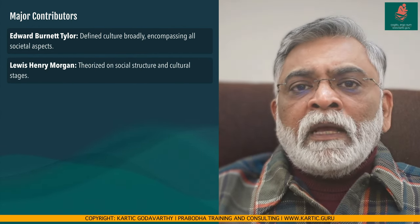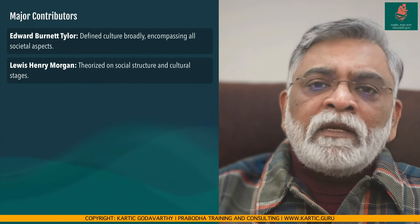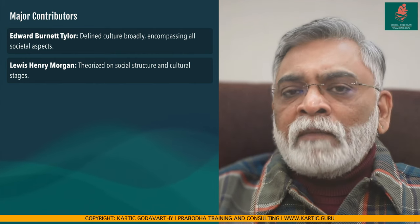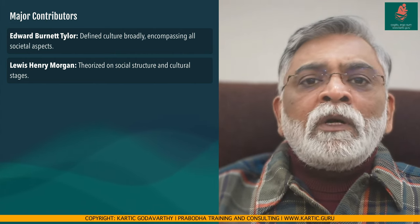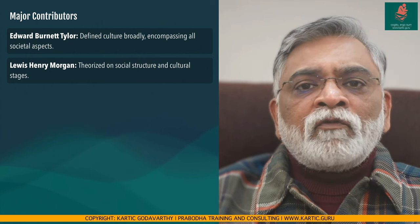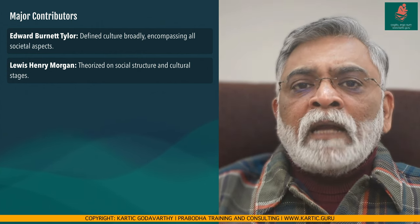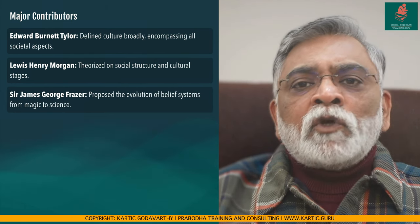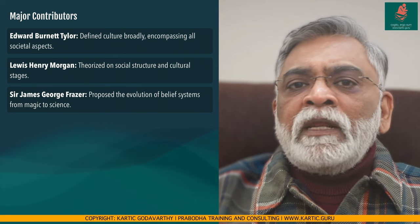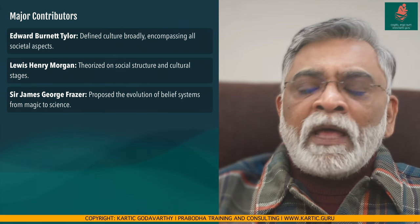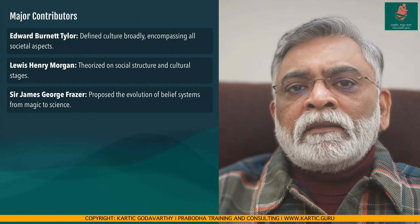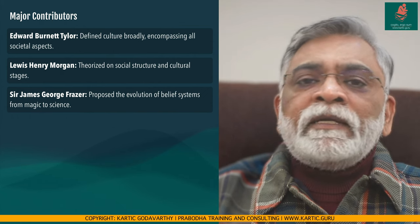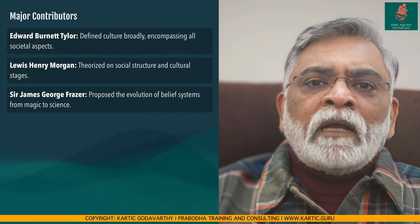Lewis Henry Morgan, another influential figure, contributed significantly with his theories on social structure and the stages of cultural development. His work laid the foundation for understanding the evolution of family, property, and government systems in human societies. Sir James George Frazer proposed that human belief systems evolve from magic through religion to science, arguing that these stages reflect different ways societies attempt to understand and control their world.